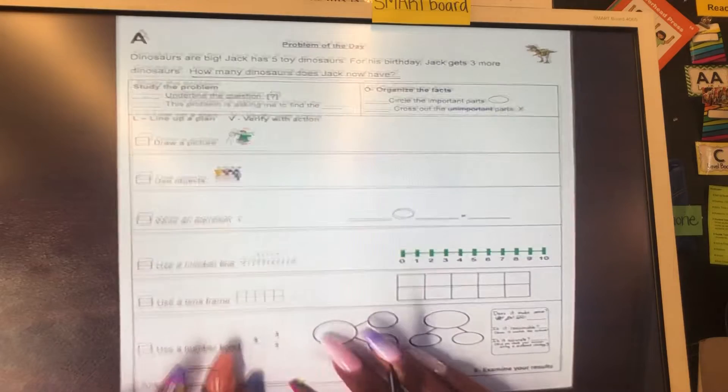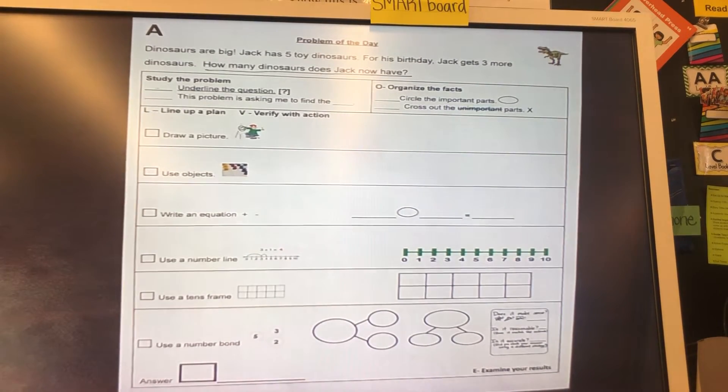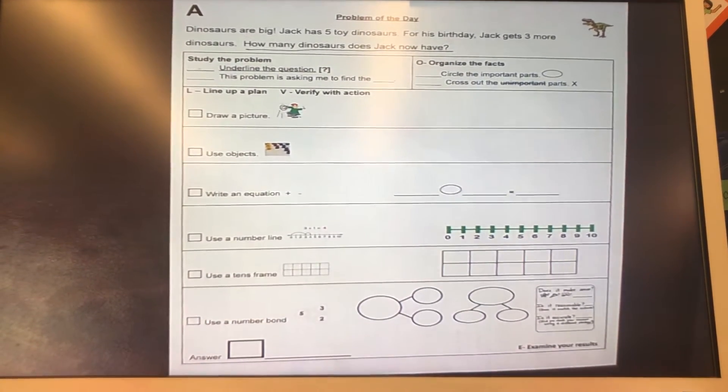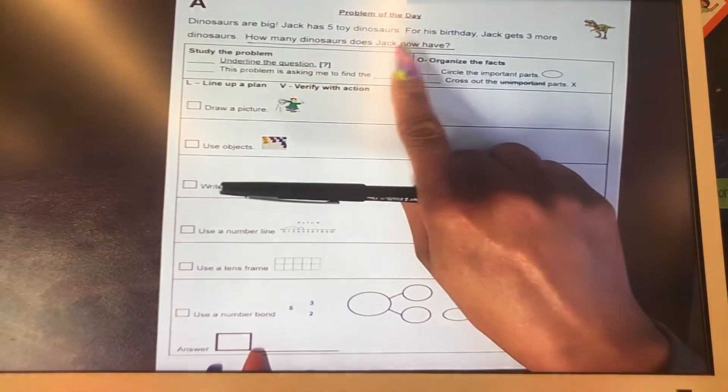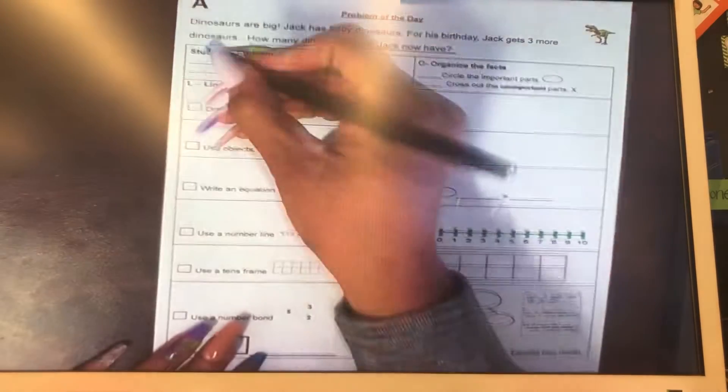Then we're going to think about what the problem is asking us to find. The problem is asking us to find the number of dinosaurs that Jack now has. Check and check.